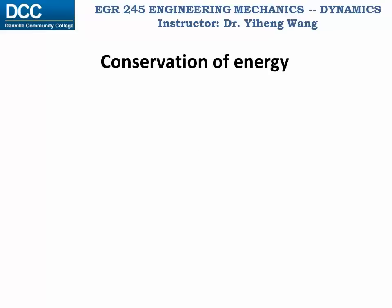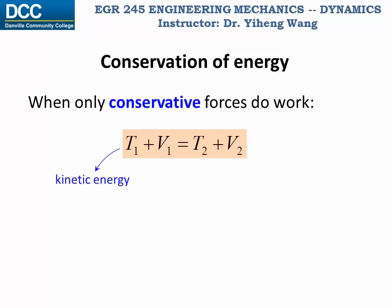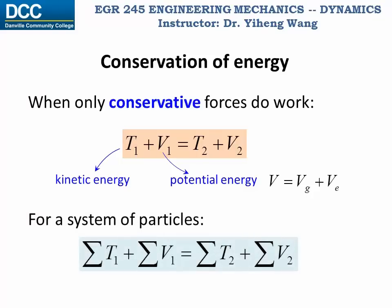With the definition of potential energy, the principle of work and energy that we learned earlier can now be rewritten into the conservation of energy, which only applies when all the forces doing work are conservative forces. In other words, if non-conservative forces such as frictional force are doing work, you cannot apply the conservation of energy. The conservation of energy is written as T1 plus V1, the total energy at state one, equals T2 plus V2, the total energy at state two. T is the kinetic energy (one-half times mass times speed squared), and V is the potential energy, which generally includes gravitational and elastic potential energy. The conservation of energy can also be applied to a system of particles, as long as all external forces doing work are conservative forces.